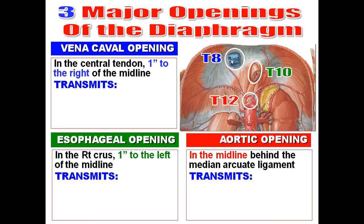Why is the vena cava opening in the central tendon? To dilate the inferior vena cava during contraction of the diaphragm and increase venous return. Why is the esophageal opening in the right crus? Because the esophagus has no anatomical sphincter, so the right crus acts as a sphincter for the esophagus. Why is the aortic opening behind the median arcuate ligament? To protect the aorta from the contraction of the diaphragm.